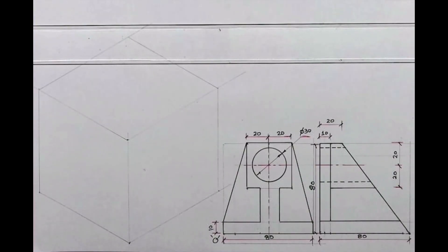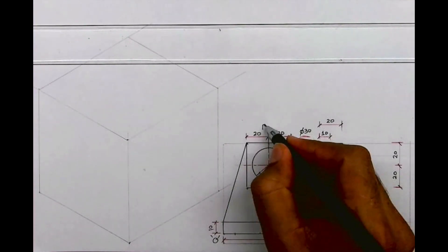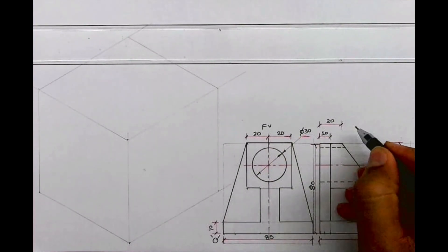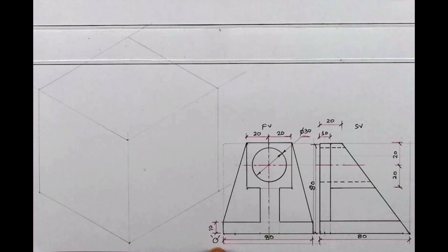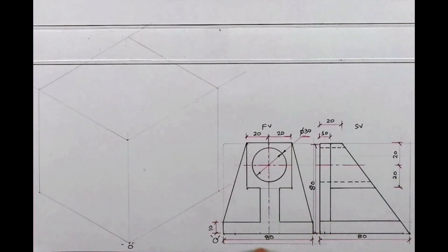Welcome to technical drawing. Today we'll see this semi-isometric. They have given front view and side view. The length is 80, height is 80, and width is also 80. So we'll draw the layout.